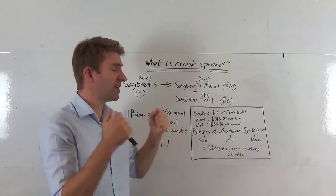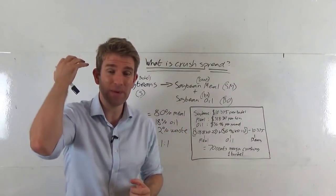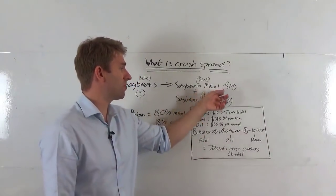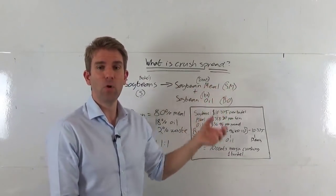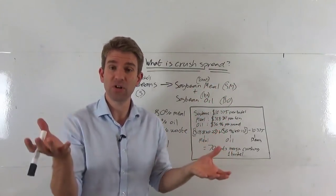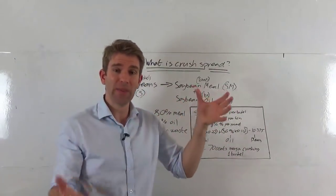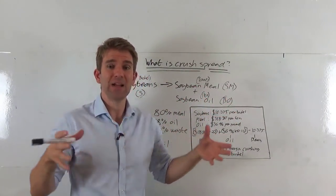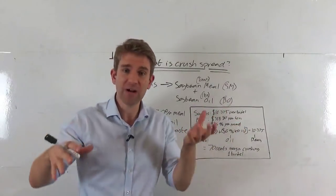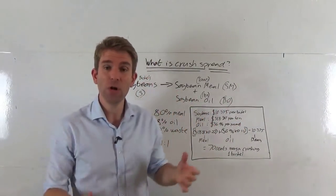We can see pretty obviously already how one of these price movements could influence the margin that the crusher is making. If the price of soybeans goes high and the actual products that come out of the crush - the meal and the oil - remain low, their margins are going to go down, because they're spending more to put in than they were before and so they're making less money.